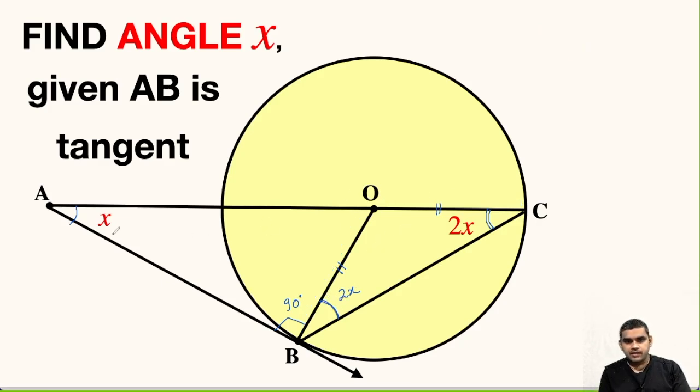Now let us focus on triangle ABC. Let me draw it. This is vertex A and the internal angle is x degrees, vertex C, 2x degrees and this is B. This is 90 plus 2x.